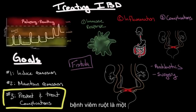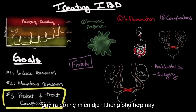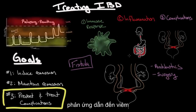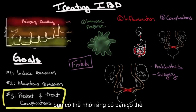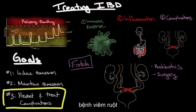In summary, inflammatory bowel disease is a relapsing-remitting disease caused by an inappropriate immune response resulting in inflammation throughout the gastrointestinal tract. We can use anti-inflammatory medications or immunomodulators to treat inflammatory bowel disease.